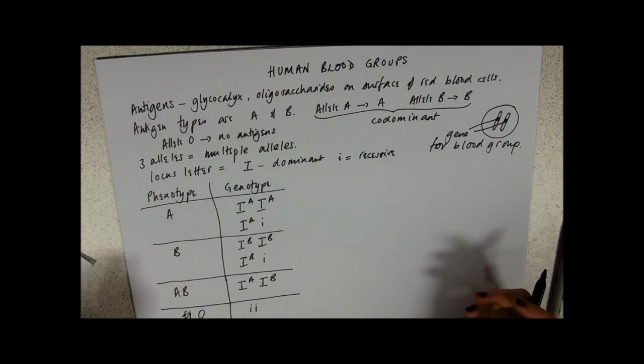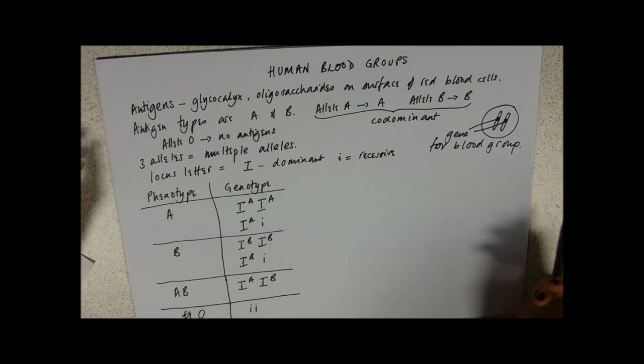And very often on programs like Holby City and Casualty ER, you'll hear them shouting for O neg. It's the universal donor because there are no antigens it won't cause a problem for donation. Now, what you do need to be aware of is that a child would get one allele from each parent.